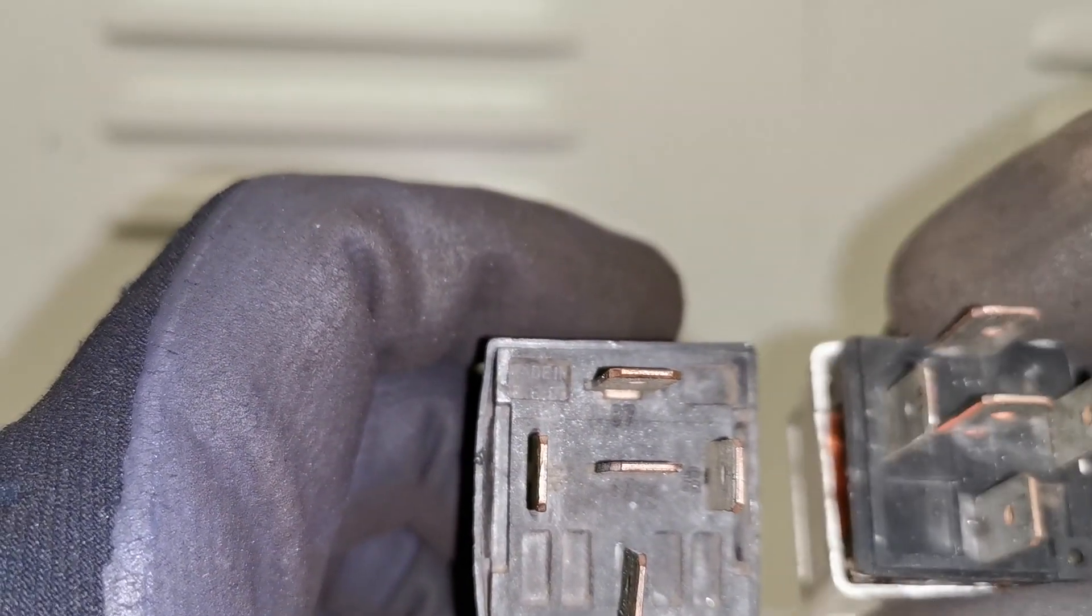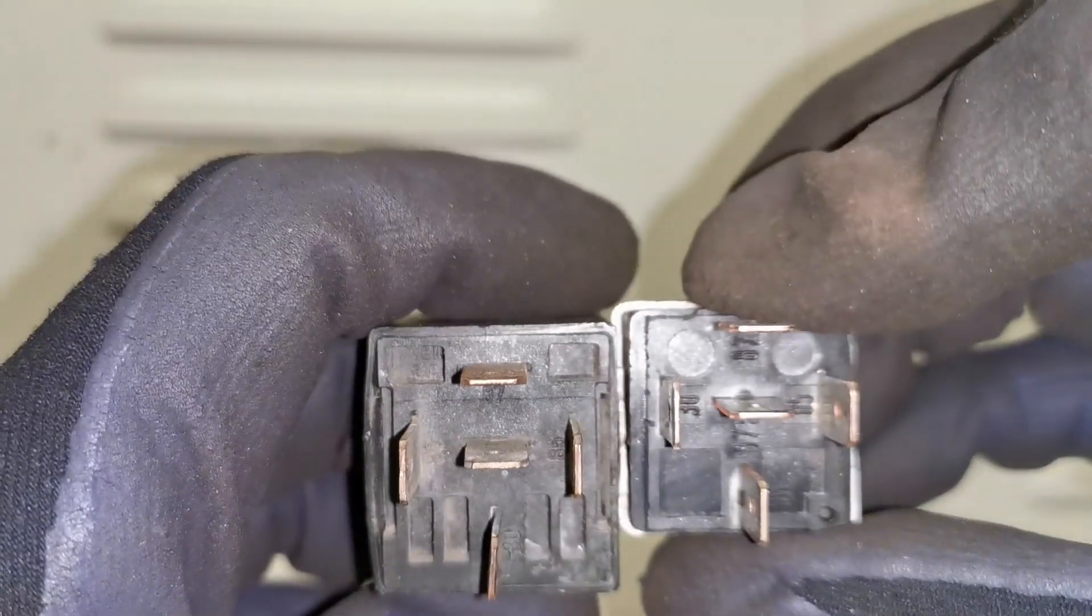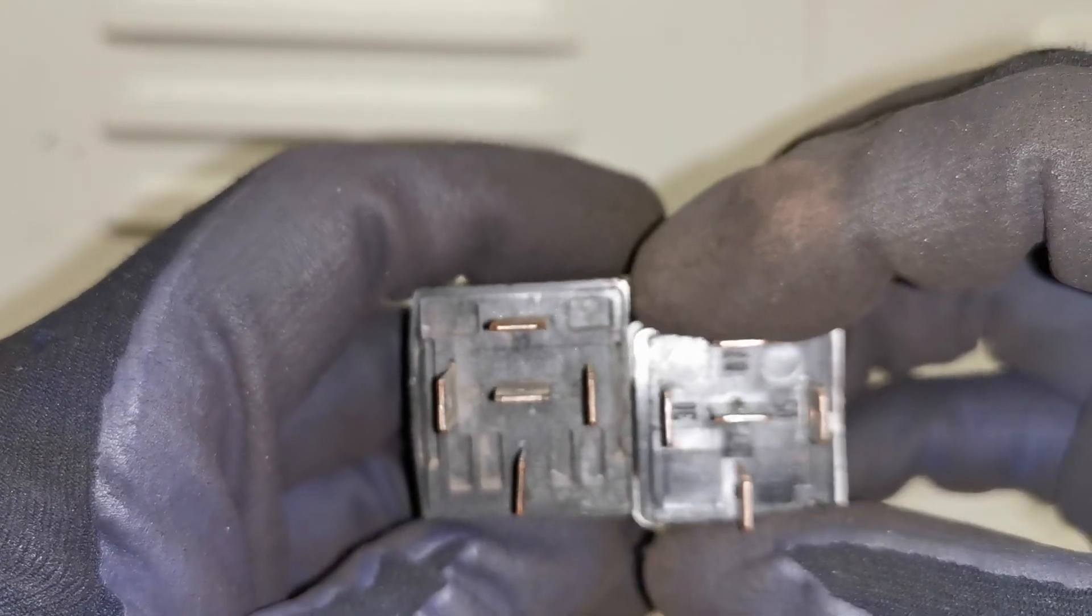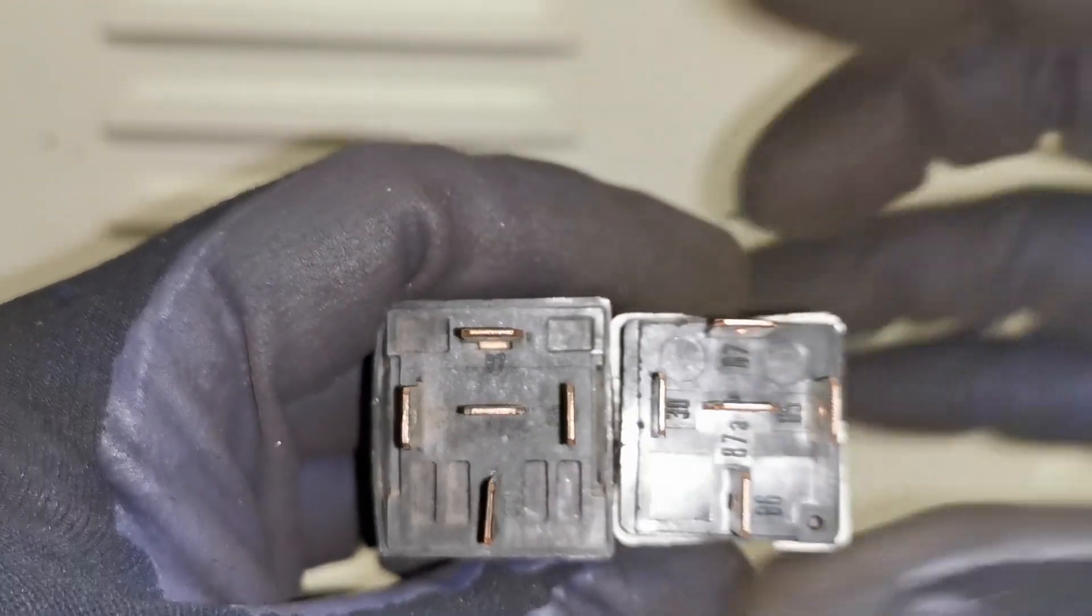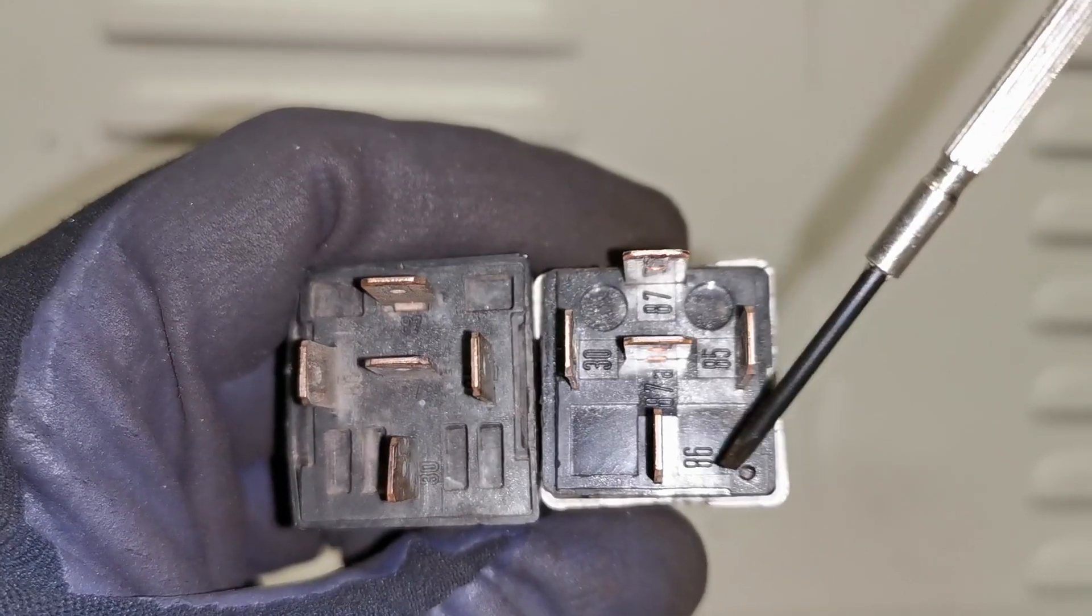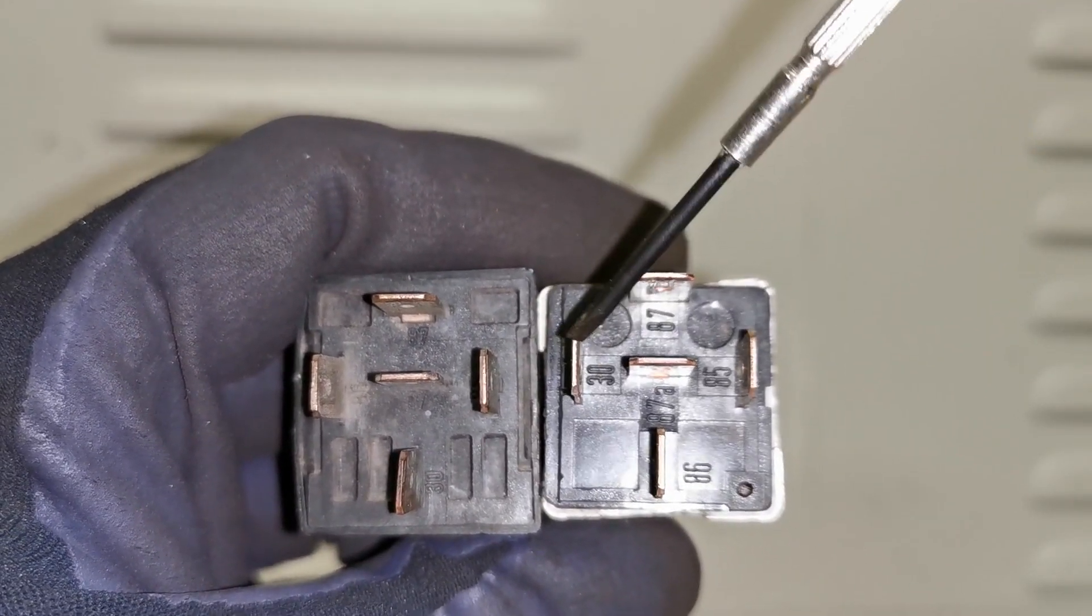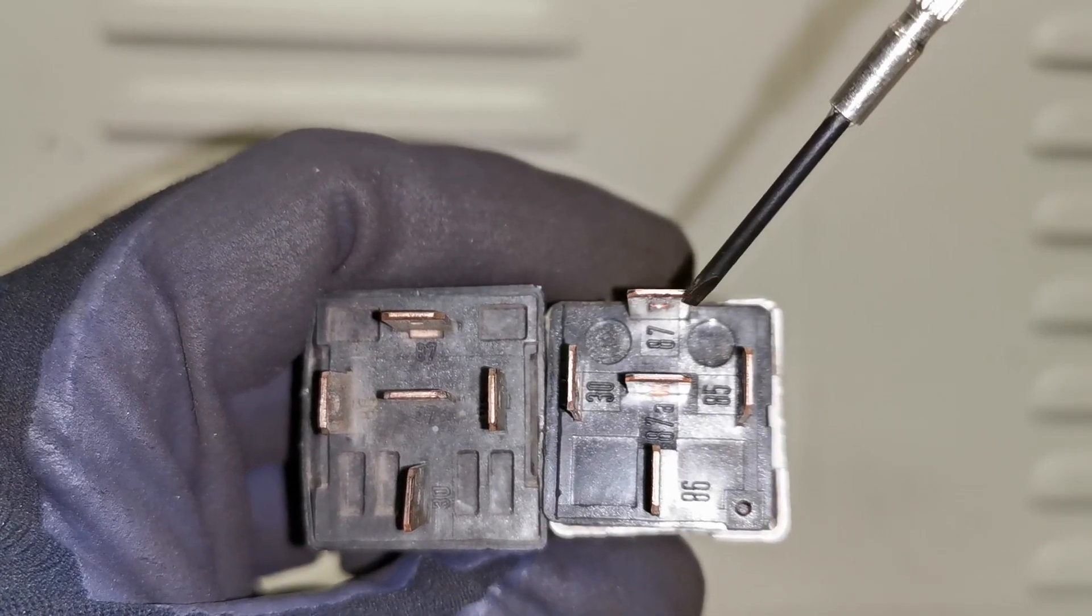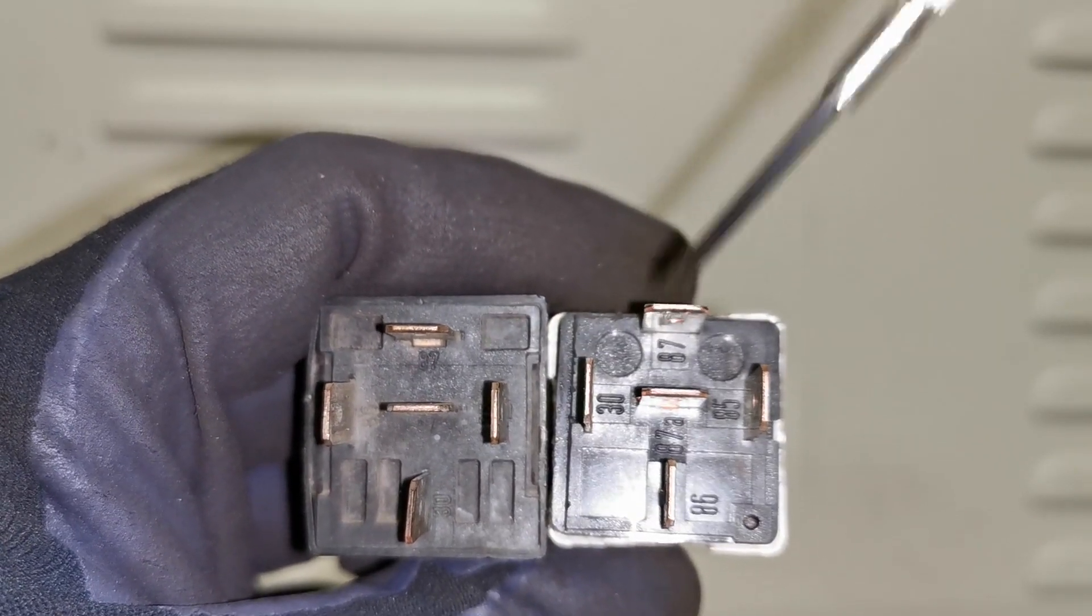Whereas if you look on this one even though they look identical in pin layout the numbering is different. So instead of number 30 down here we have 86 and 30 switches over to this side. 85 is here and 87 is here.